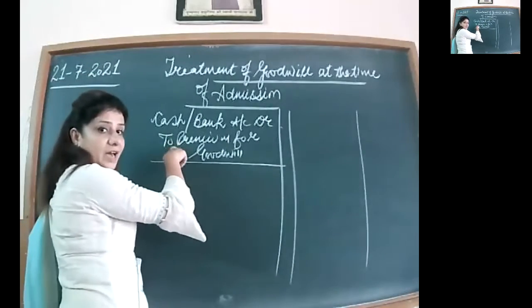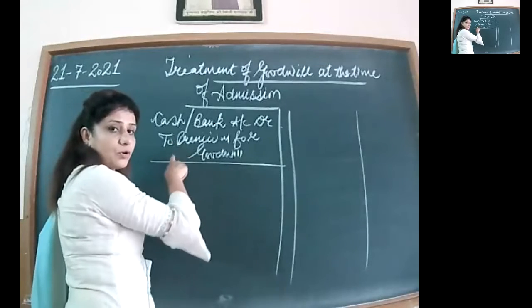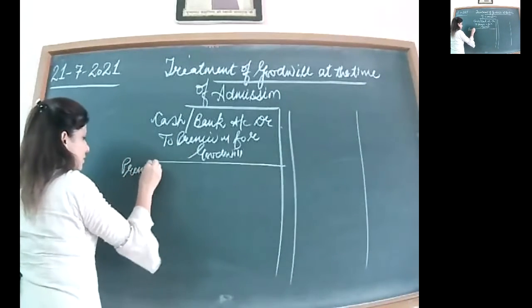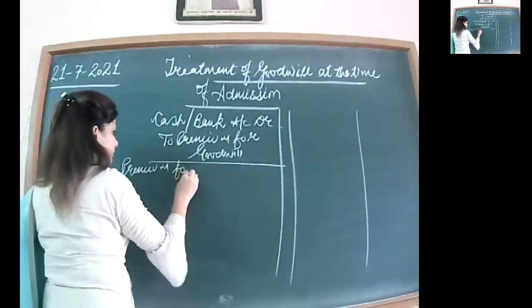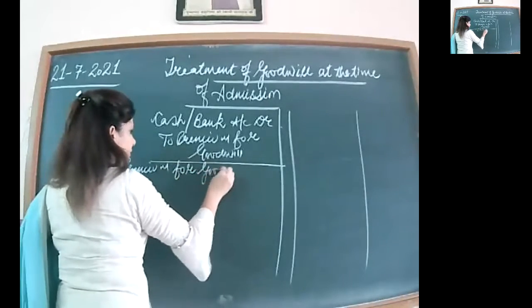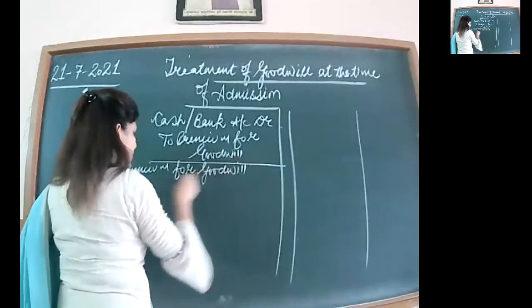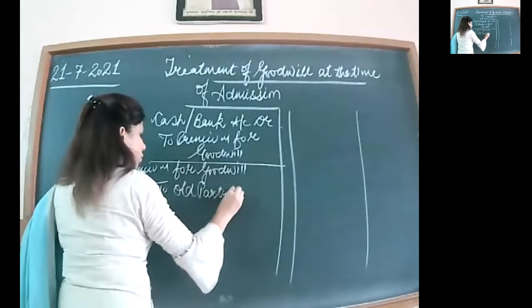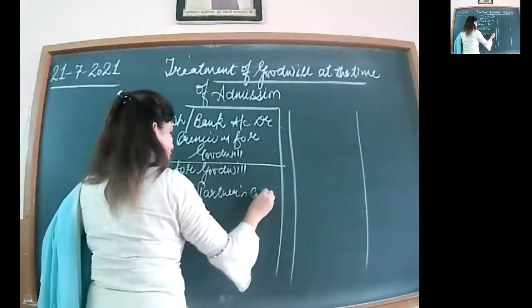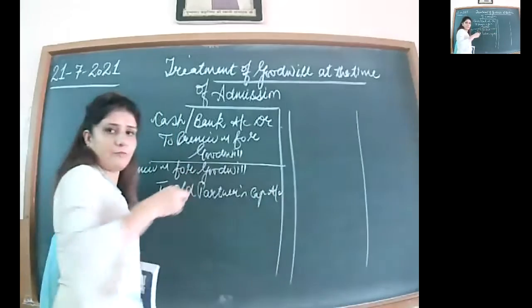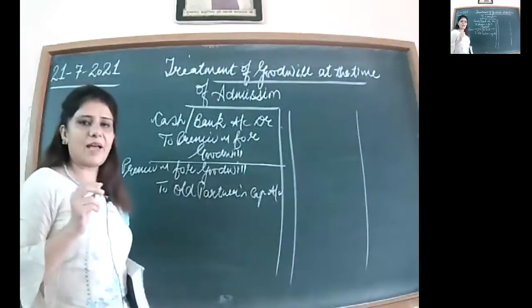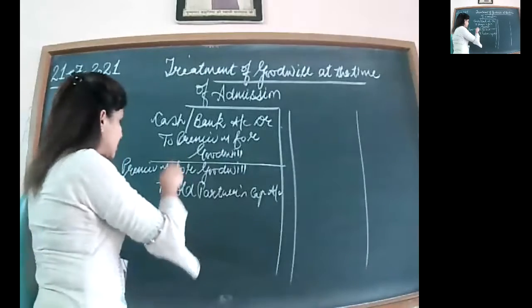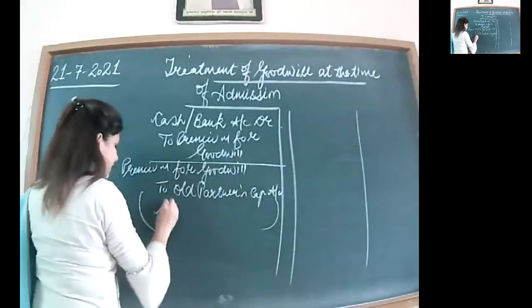In the first entry, we are crediting the premium for goodwill. In the next entry, we will be debiting it. So: premium for goodwill account debited, to old partners' capital account. If the capitals are fixed, we follow the same rule as in partnership fundamentals — we credit their current account. This entry is passed in the sacrificing ratio.